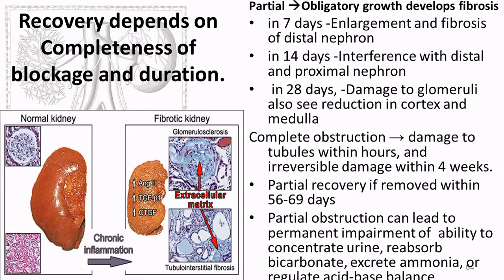With partial obstruction, scar tissue can still develop. Within 7 days it starts getting enlarged and fibrotic; within 14 days it interferes with flow; by 28 days you see total reduction of cortex and medulla from scar tissue. That scar tissue and those nephrons don't come back — about a month leads to more permanent change. With complete obstruction, damage can occur within hours. Urine keeps building up like a water balloon being overfilled, eventually destroying nephrons, all replaced by scar tissue. Damage within four weeks is irreversible.